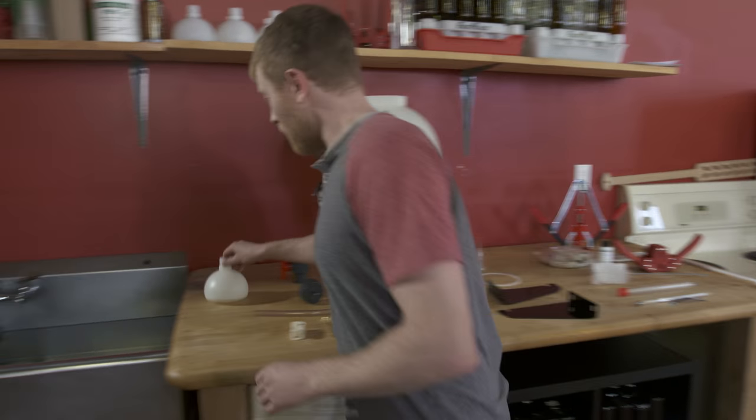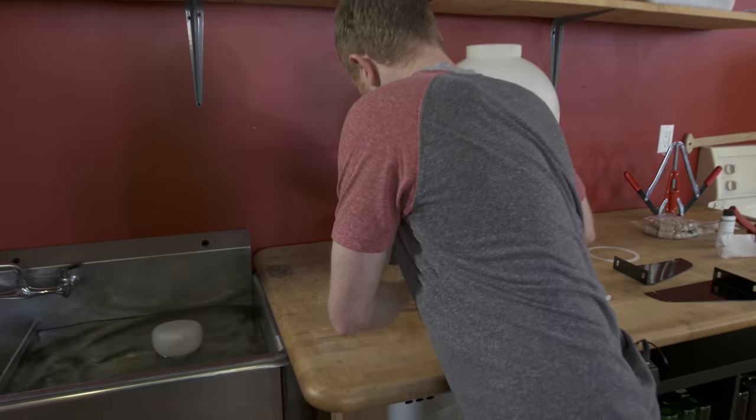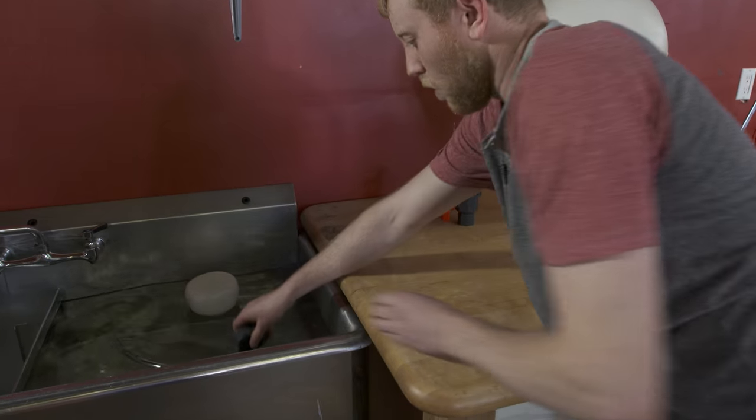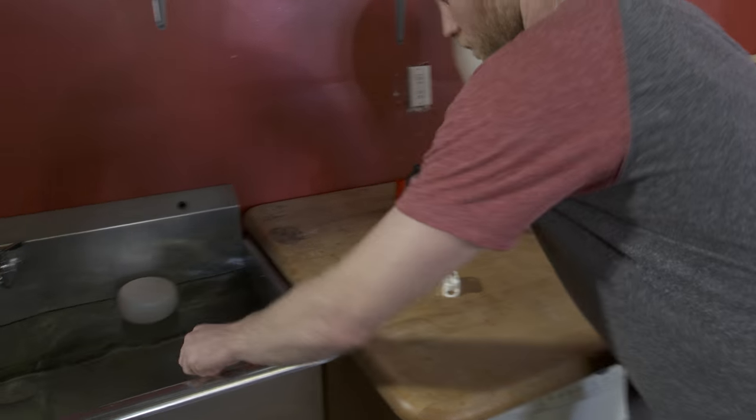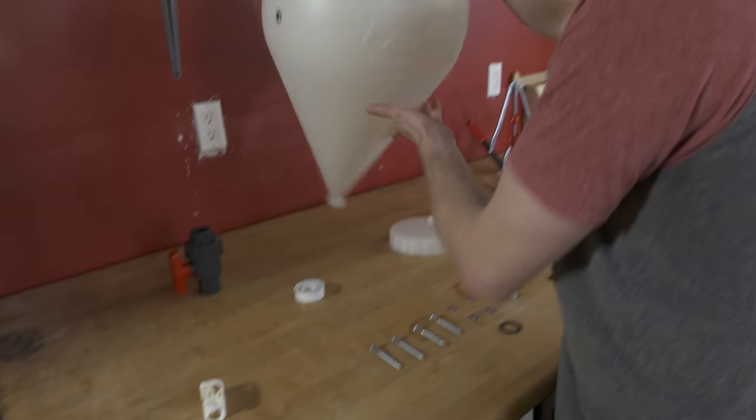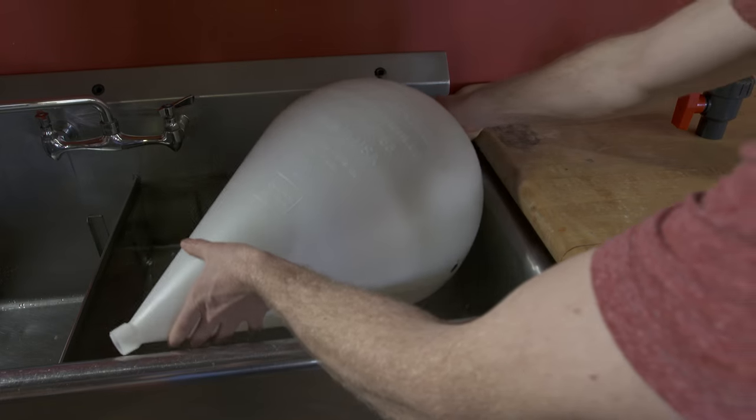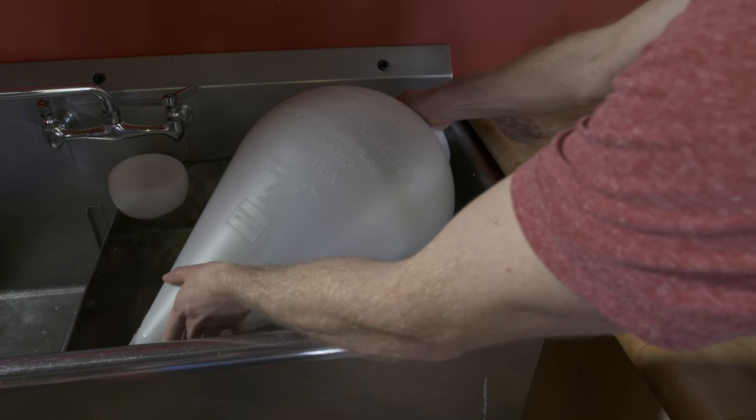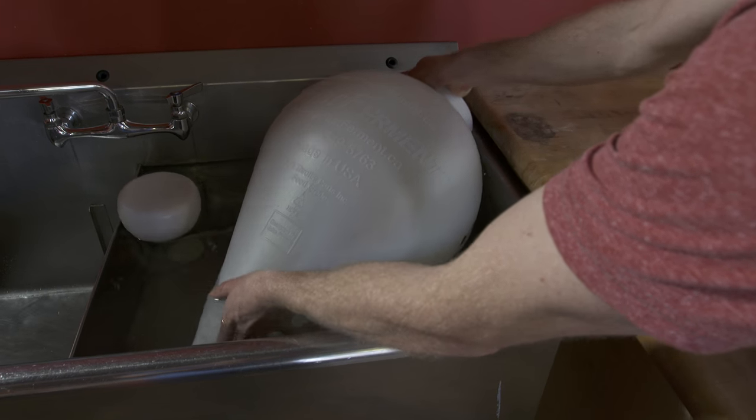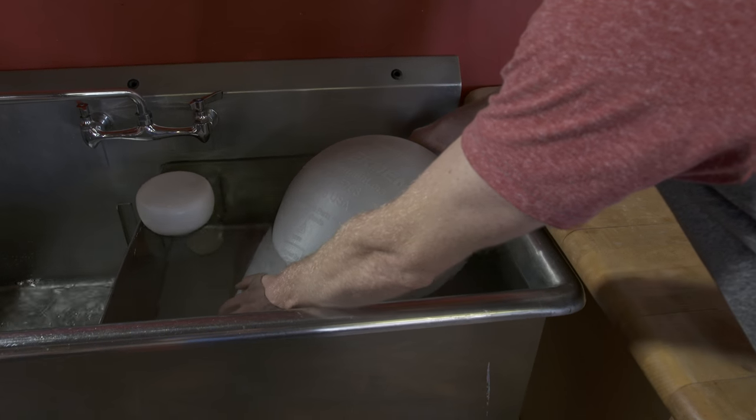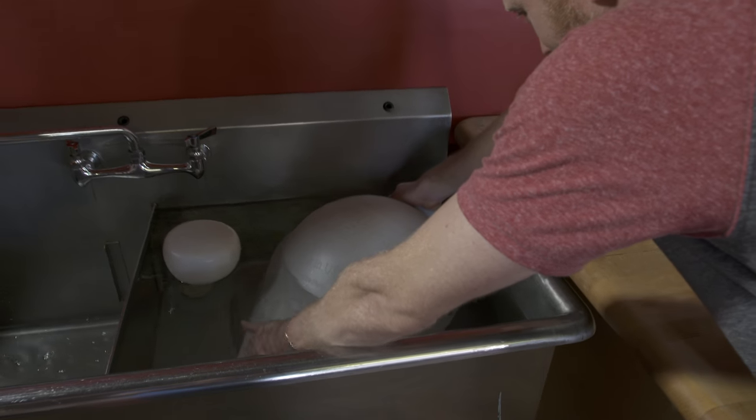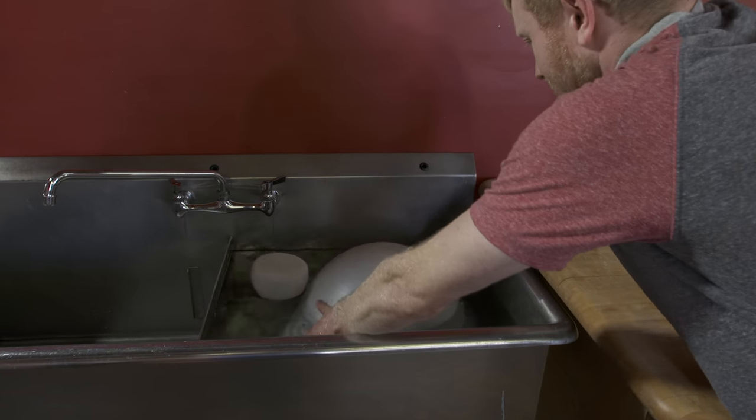Basically all the components just get added to the sink here. Anything that touches the wort. So your thermal well is going to touch it. Your conical body is going to touch it. Get a little water in it. Fill her up.